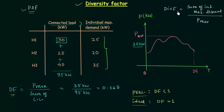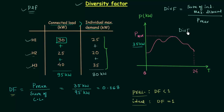Using this we will calculate the diversity factor for this particular case. The individual maximum demands occur at different times — house number one will not have its individual maximum demand at the same time as house two and house three, and the same applies to the second and third houses. The sum of individual maximum demands is 25 plus 20 plus 35, which equals 80 kilowatts. So the diversity factor is simply 80 kilowatts over 35 kilowatts, which gives 2.28, and it is greater than 1.